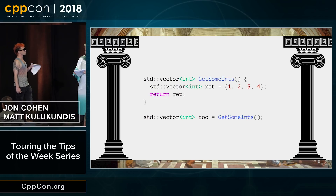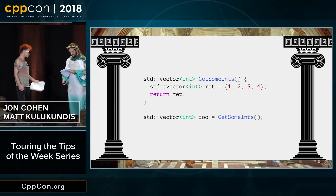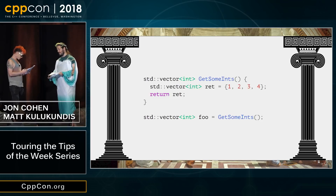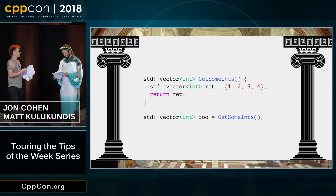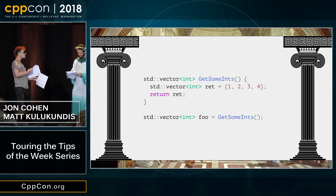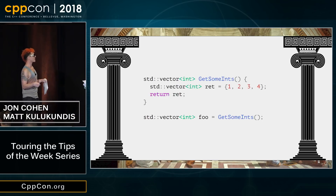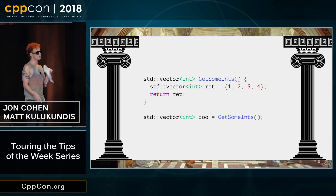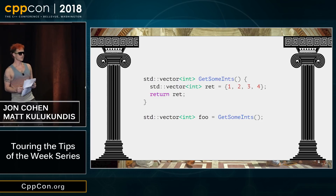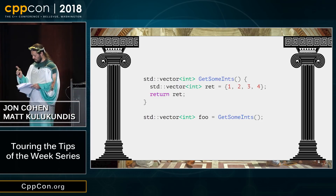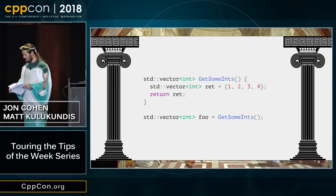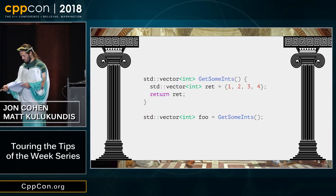What are you getting on with this twin business? Do we ever have more than one name referring to the data in the vector? Well, we've got Rhett inside the function, and we've got foo outside the function, so there's only ever one name at a time. Indeed. The language knows that the same data is never referenced at the same time, so it can move from the vector into the destination vector.